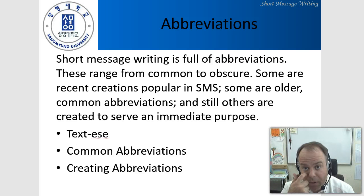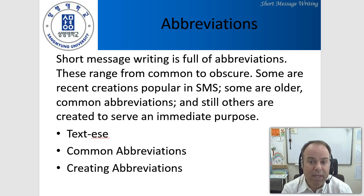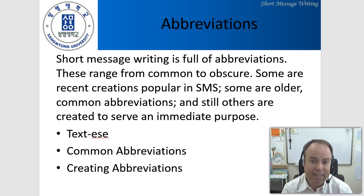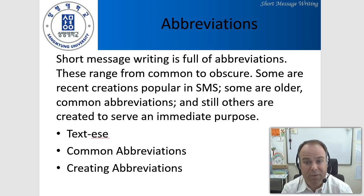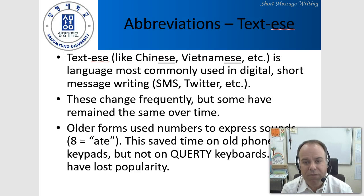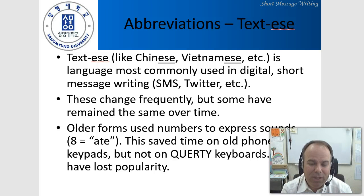Abbreviations have been around a long time — certainly even before the technologies we use them on today. They become more popular and more necessary in short spaces when we want to write fast and exchange information quickly. Three types we'll talk about today are: textese, which is the language that grew up around texting; common abbreviations, things that have been around for years; and making your own abbreviations, which speakers of languages do all the time. Textese is kind of a language in its own right, generally used in digital formats and short messaging like SMS and Twitter.